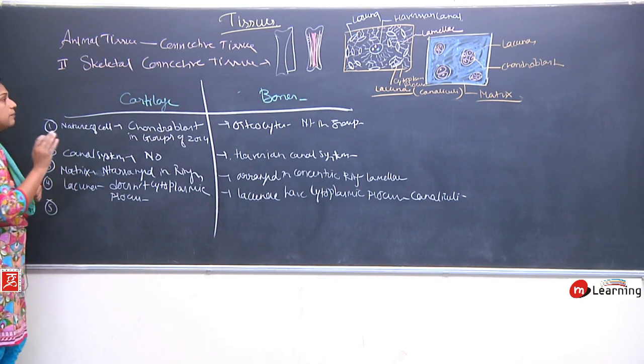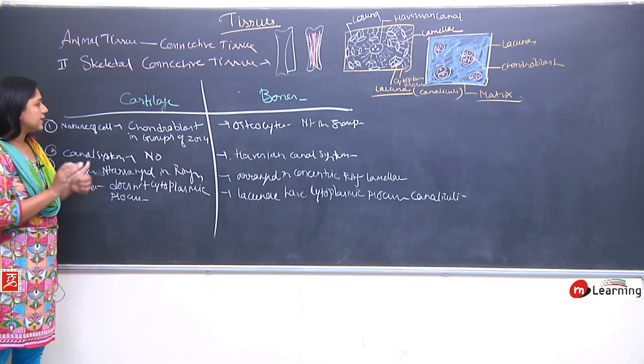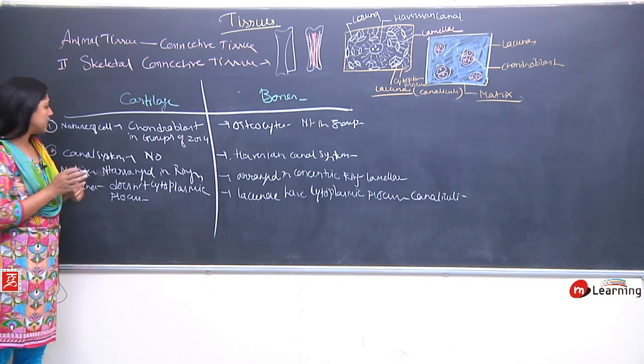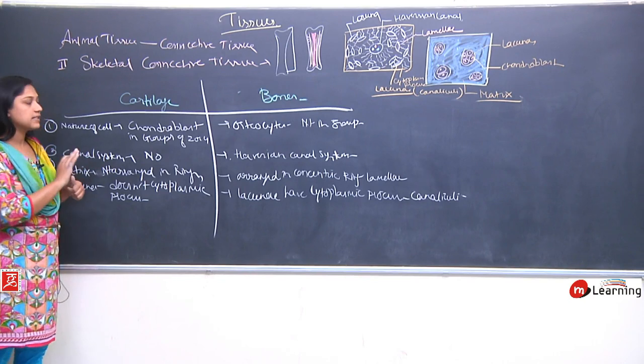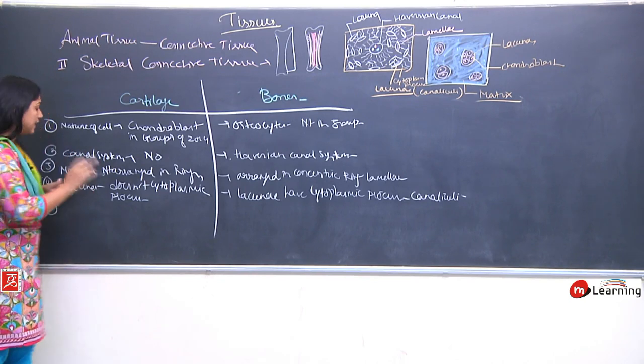Whereas in bones, the lacunae have cytoplasmic processes called canalicules. The cells in cartilage are called chondrocytes, while in bones they are called osteocytes. Cartilage has no canal system, but bones do.